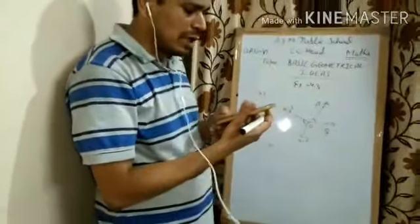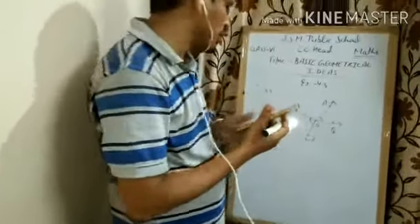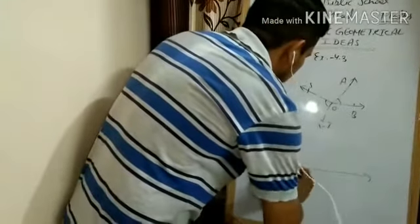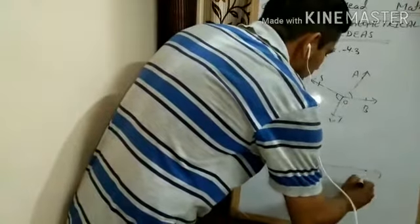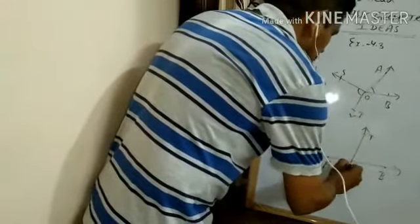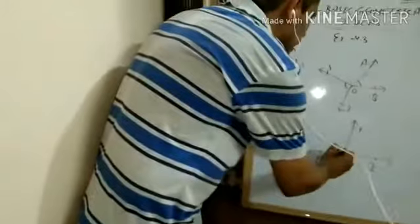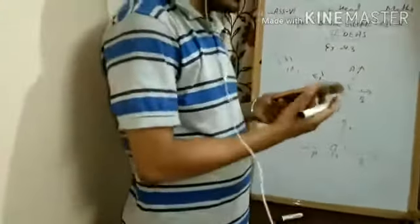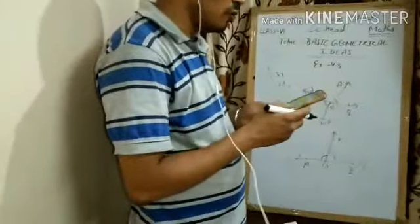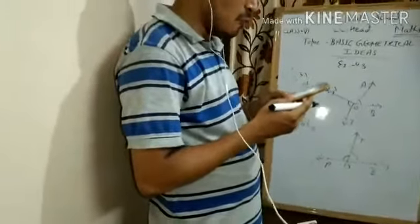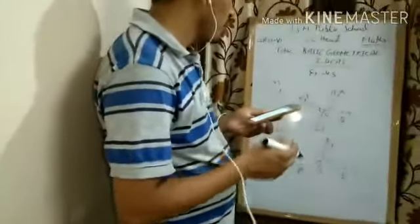For part B, we can create two angles which have two points in common. We can make it very easily. We have made a straight line AB. Here we have made an angle named DAB - and here this point is O. You can see these two angles share two common points.